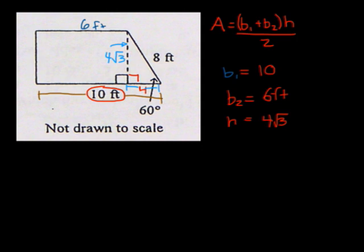So let's go ahead and plug all those into our formula. Area equals base 1 plus base 2, so 10 plus 6, times the height, which is 4 radical 3, divided by 2.